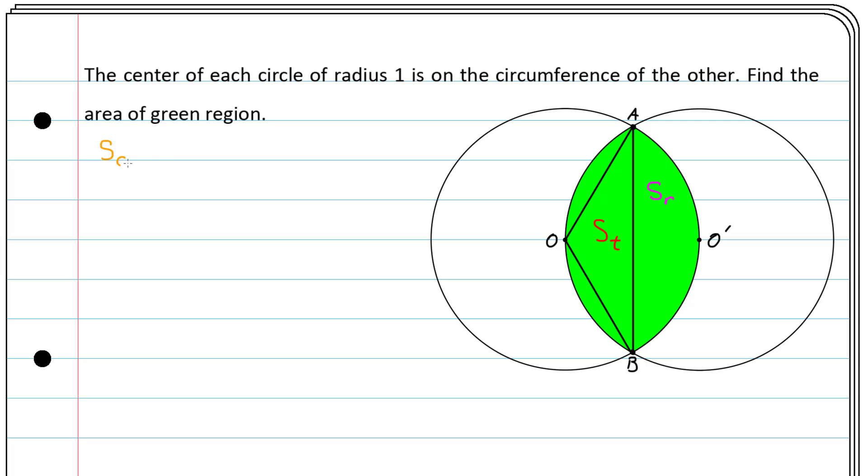So SC equals ST plus SR, where SC stands for the area of the sector. But to know the area of the sector, we need the angle here. What is this angle? If I draw the straight line from O to O' and from A to O', I get an equilateral triangle AOO' with side length 1. Why?